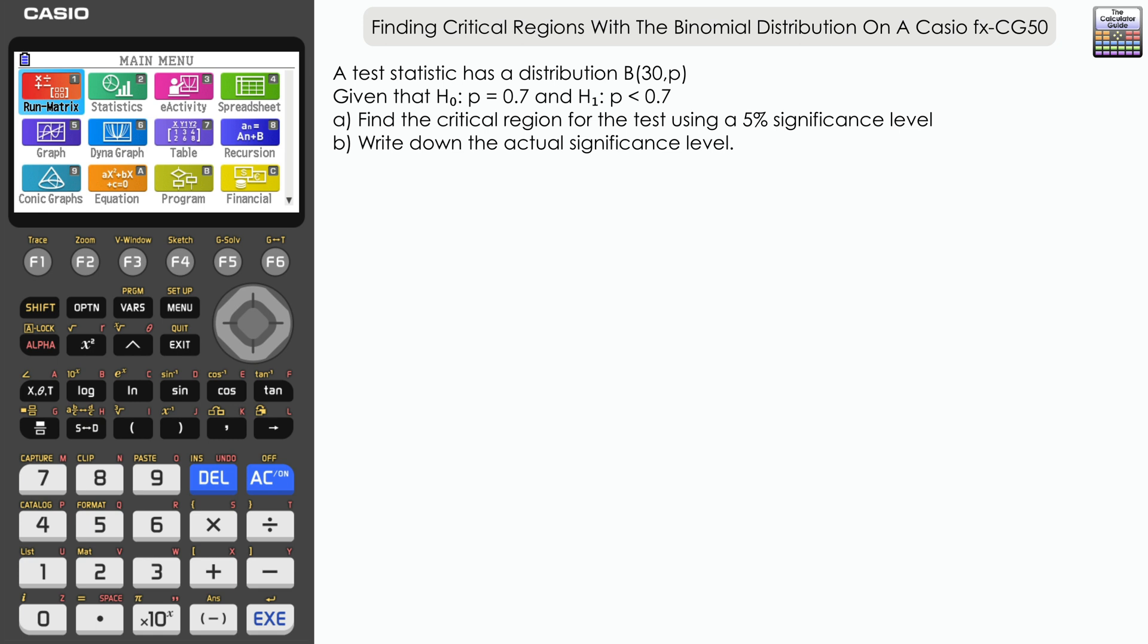So the first question here, a test statistic has distribution binomial with an n of 30 and a probability p. Now we're given that H₀: p = 0.7 and H₁: p < 0.7. You can see that we've set up for a one-tailed test there.